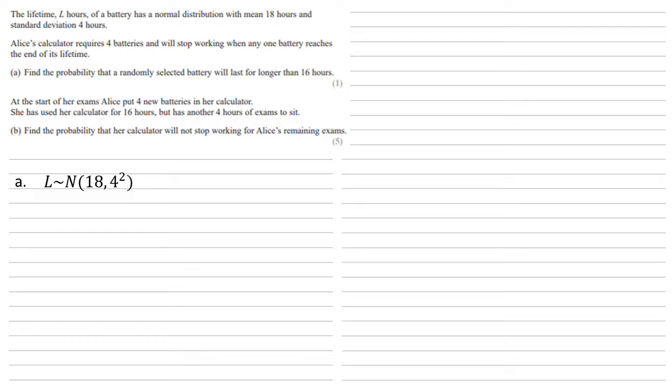Using the normal distribution function on the calculator with those values, we get that the probability of L larger than 16 equals 0.691 to three significant figures.